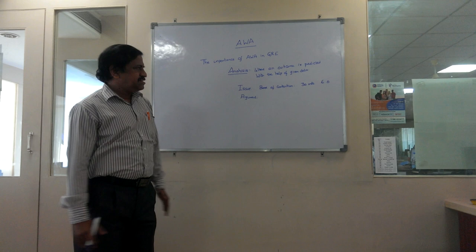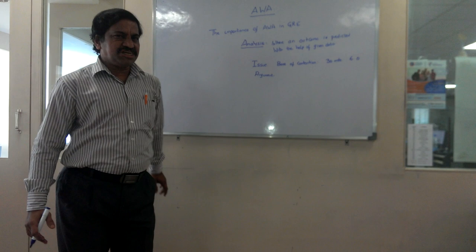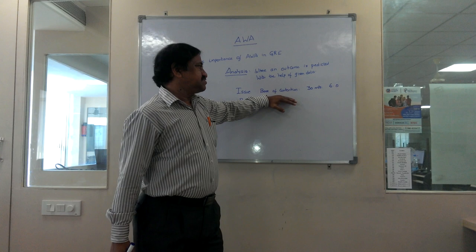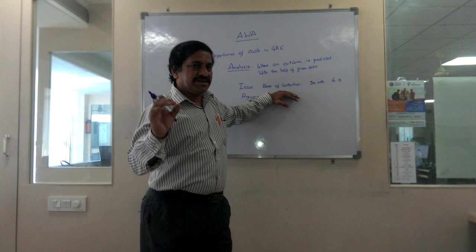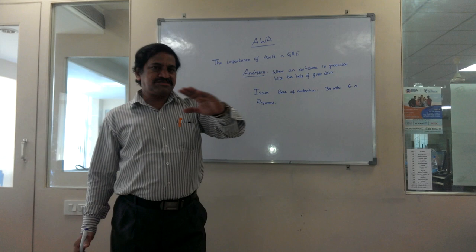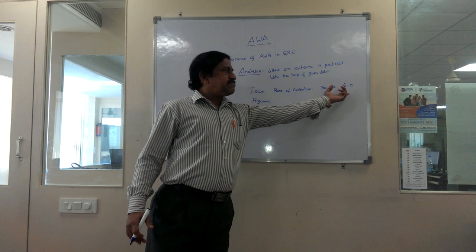The issue task is the first part of your GRE where you write your position, explain your position, and explain why you agree or disagree. You type it down and there is no word limit for the issue and argument topic, so it can be 200, 100, 500, or 1000 words. What is most important is how well you articulate your ideas, how well you present them, and how beautifully you draft your response.